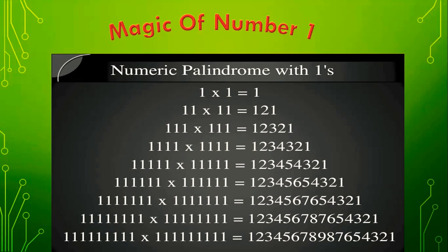First, take 1 and multiply 1 by itself: 1 × 1 = 1. Read it from both sides — it is 1 only. Next, 11 × 11 = 121. When you read 121 from both sides, it is 121 only. Then, 111 × 111 gives you 12321. This is also a palindrome number — read either side and you get the same.